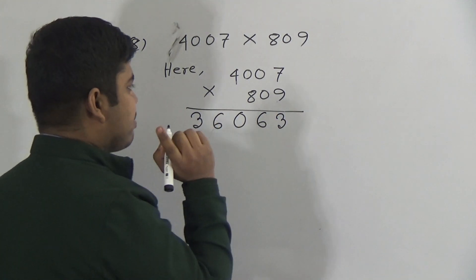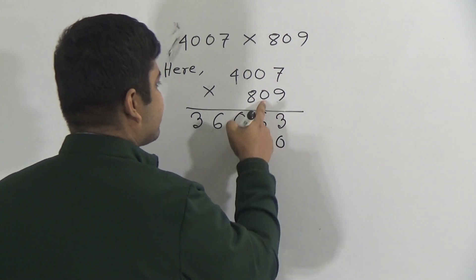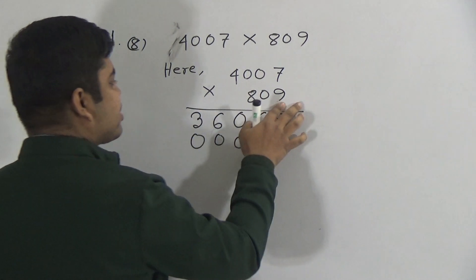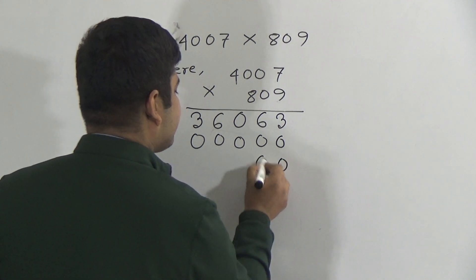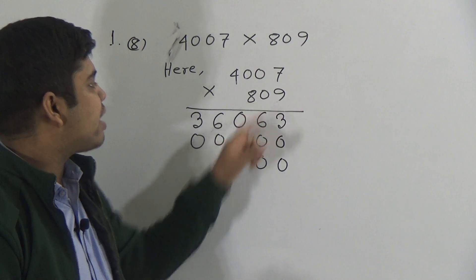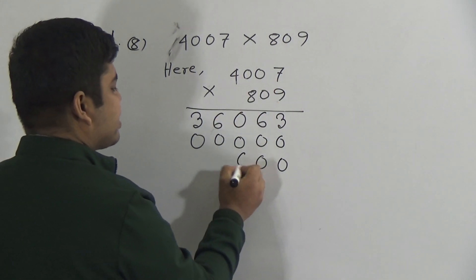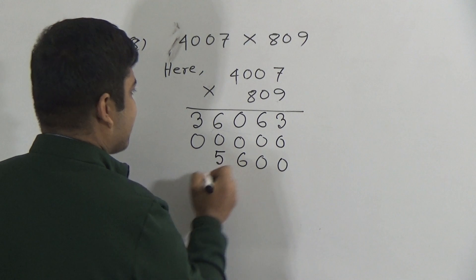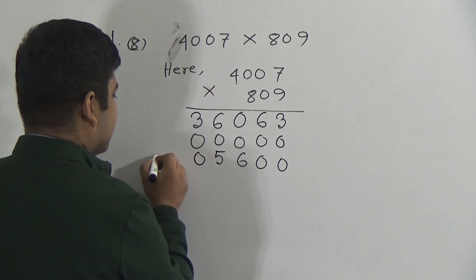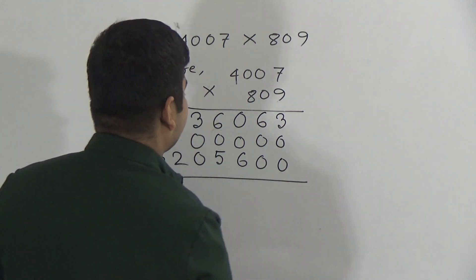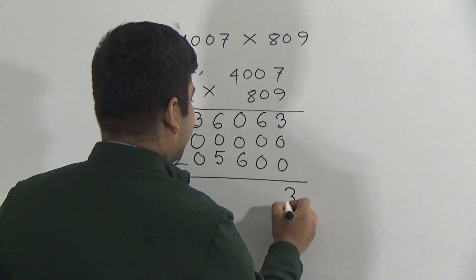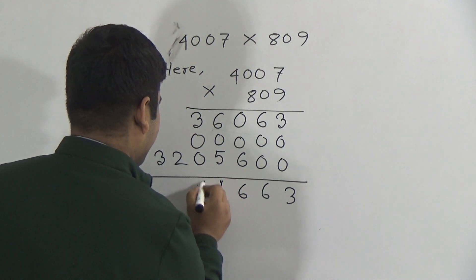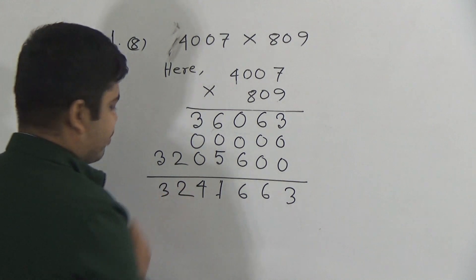Now we multiply 4007 by 0. 0 sevens are 0, 0 zeros are 0, 0 fours are also 0. Ones place and tens place are both done, so I write 00 here. Now we multiply 4007 by 8. 8 sevens are 56 — write 6, carry 5. 8 zeros are 0, plus 5 equals 5. 8 zeros are 0, and 8 fours are 32. Now I add the partial products.